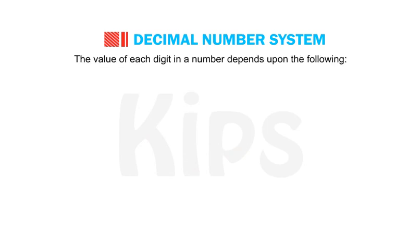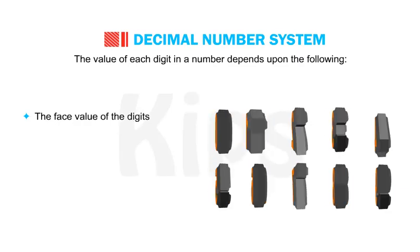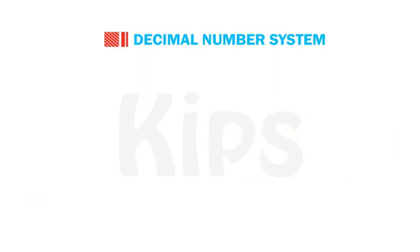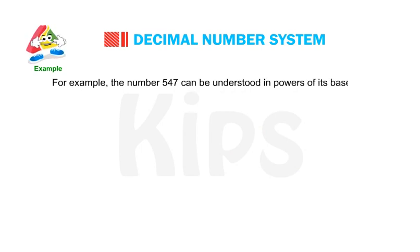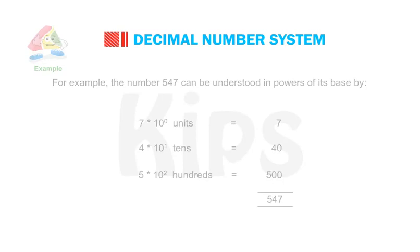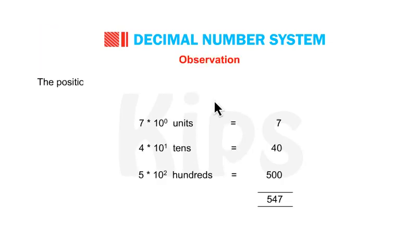The value of each digit in a number depends upon the face value of the digit, the base of the number system, and the position of the digit in the number. For example, the number 547 can be understood in powers of its base: 7 × 10⁰ in the units place gives 7; 4 × 10¹ in the tens place is 40; and 5 × 10² in the hundreds place is 500. When we add these up we get a total of 547.